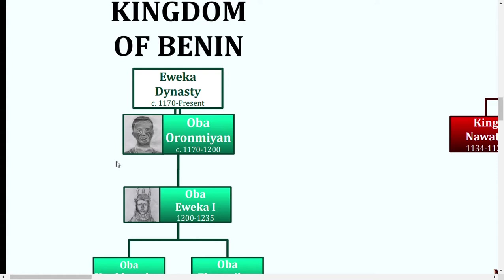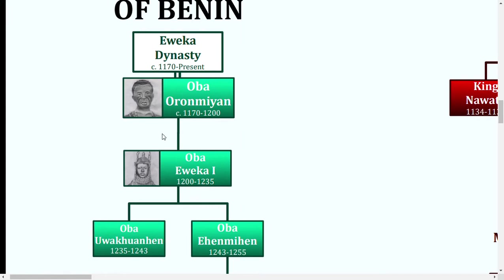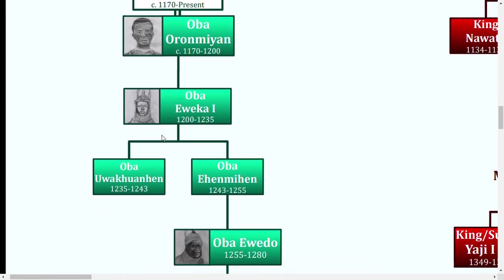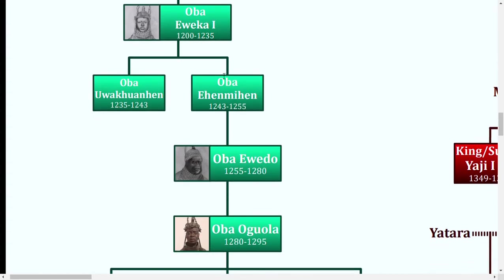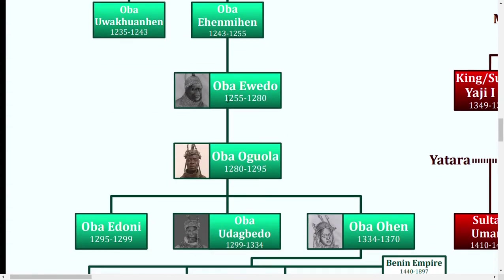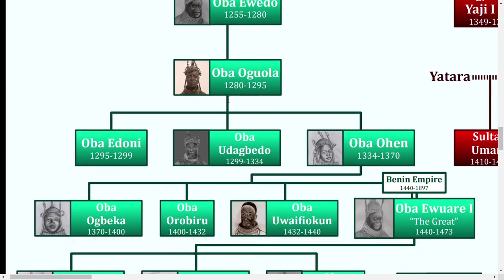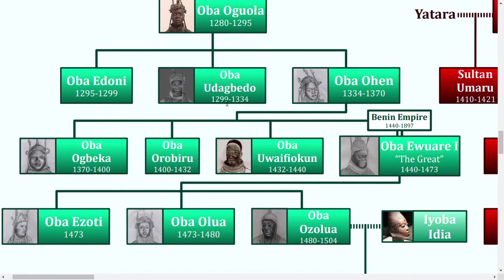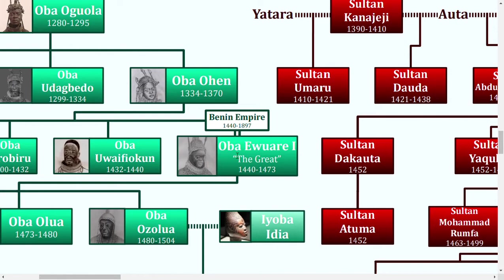This guy, Oranmian, established the long-reigning Weka dynasty, which still continues to this day. He passed it down to his son Weka, right here, who passed it to his two sons, and it continued in this fashion until we get to Oba Ewuare the Great, who really started the heyday of Benin, establishing the Benin Empire at the beginning of his rule.